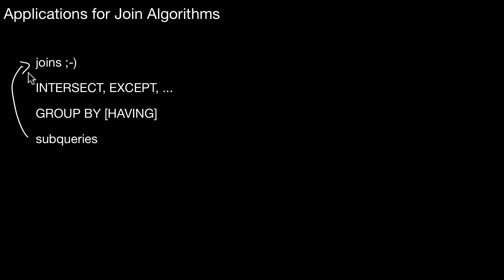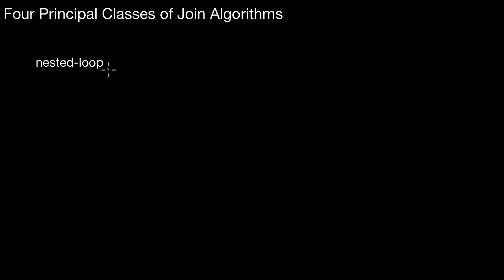So there are basically four principal classes of join algorithms. What are those classes? Well, the first is nested loop. That is what this video is about. Then the second is index nested loop. We will also get back to that in this video.